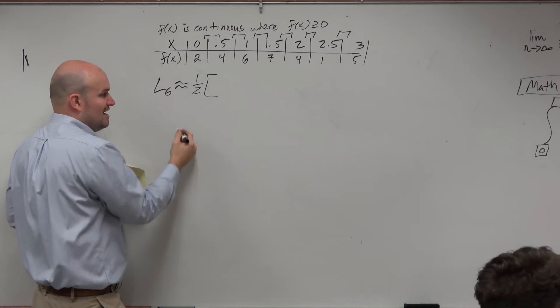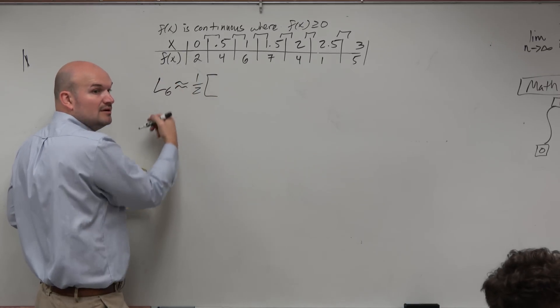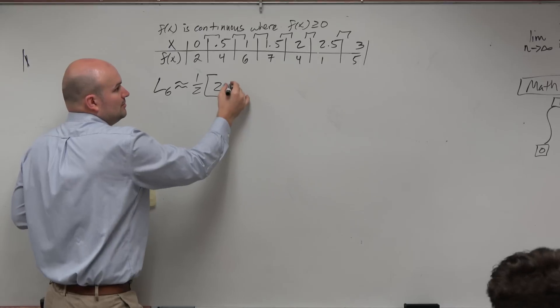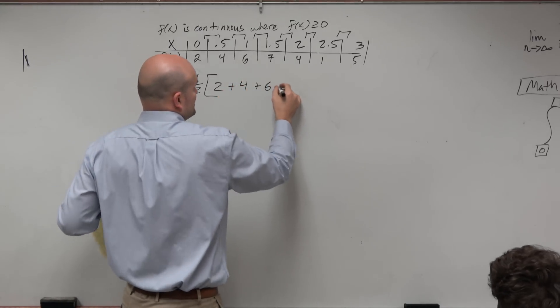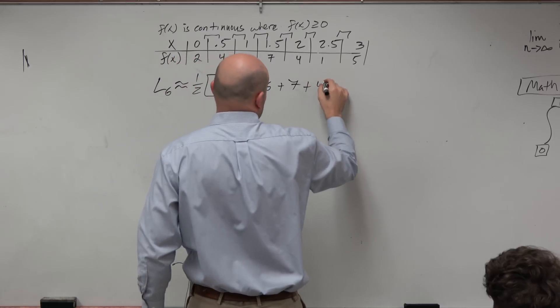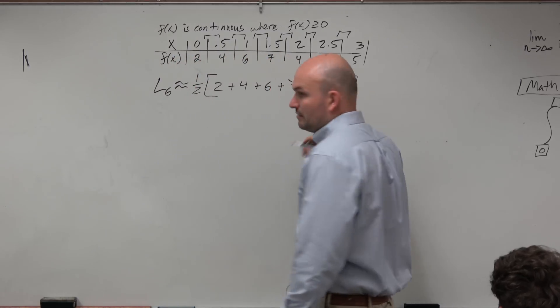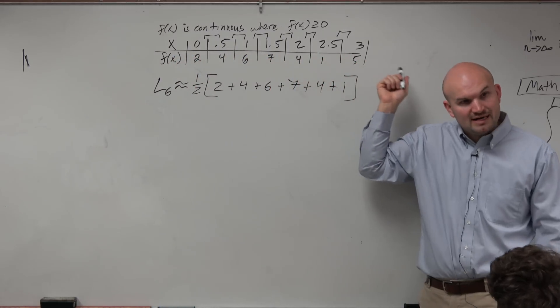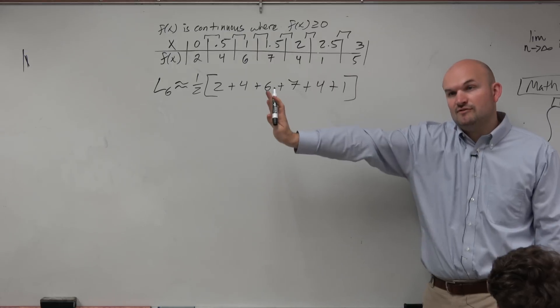2. 2, all right? If you were to graph this, guys, 2 is the farthest left height that we have. So it's going to be 2 plus 4 plus 6 plus 7 plus 4 plus 1. Right? We don't use that far right interval, right? Because you're starting from the left and going over.